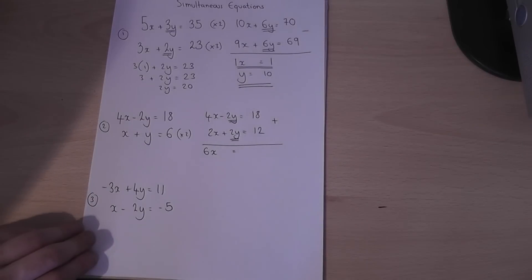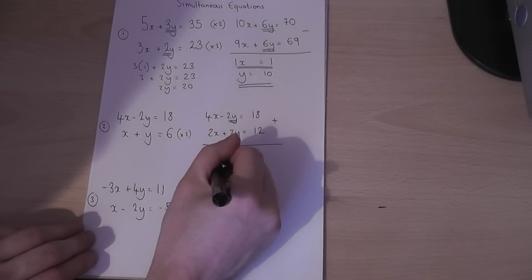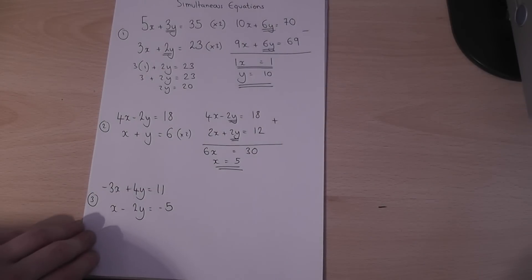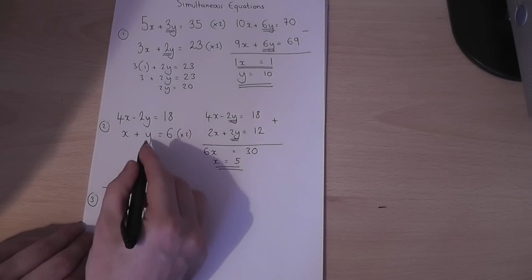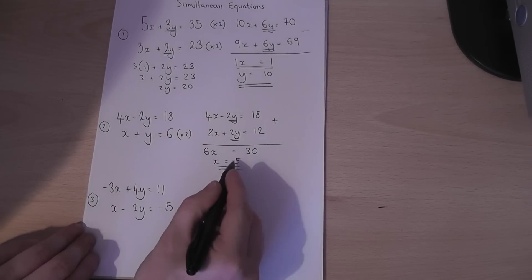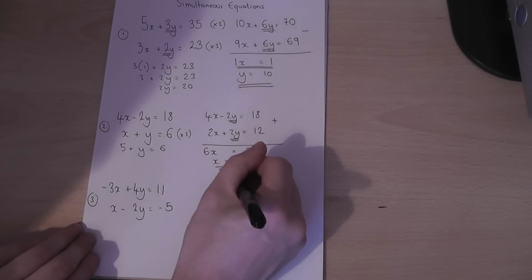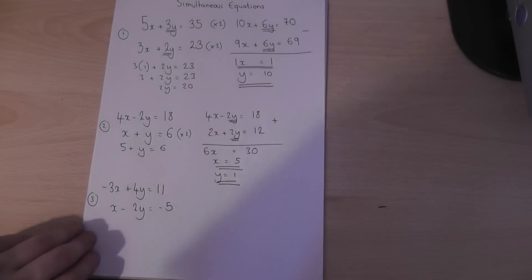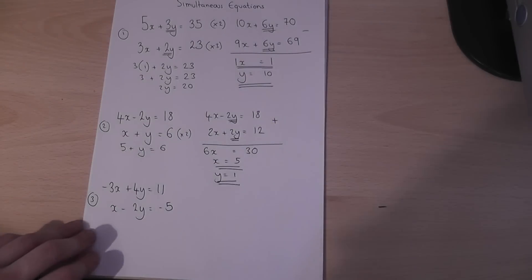4x plus 2x is 6x, minus 2y plus 2y cancels out, 18 plus 12 is 30. So 6 times x is 30, x must equal 5. That is one of the variables, but if x equals 5, if I pick the simplest equation, probably this one here, x is 5, 5 plus y equals 6, therefore y must equal 1 because 5 plus 1 equals 6. So these are the two solutions to the original simultaneous equations.